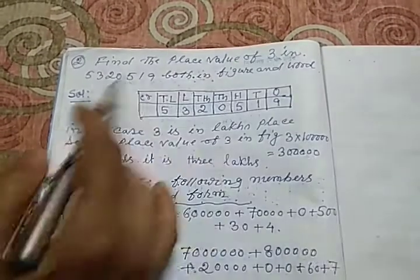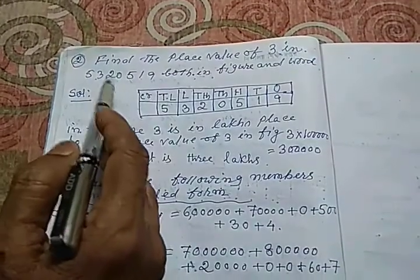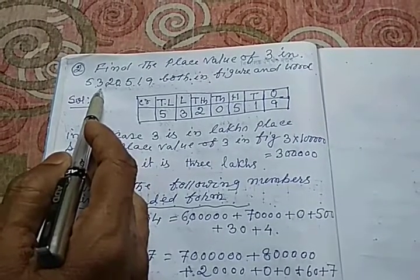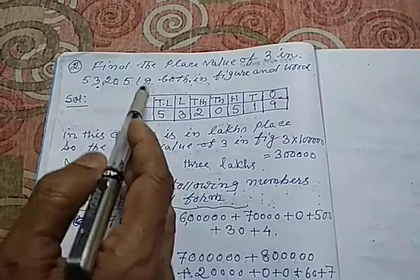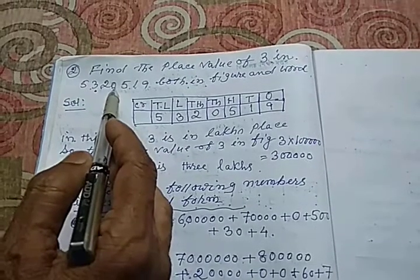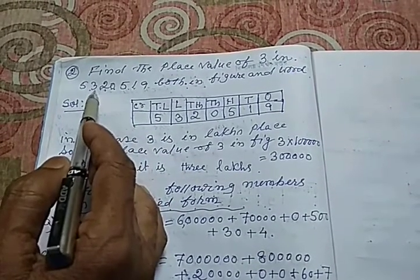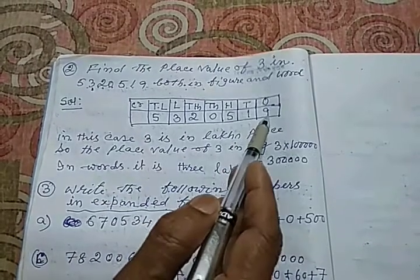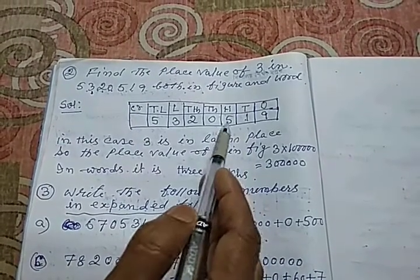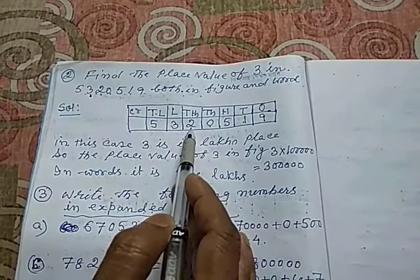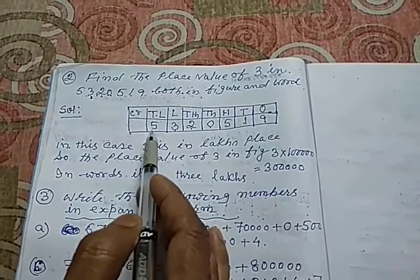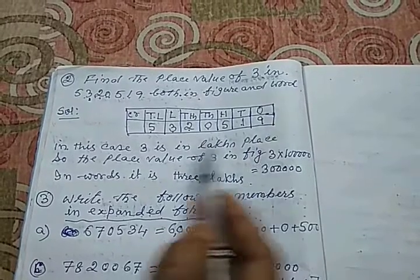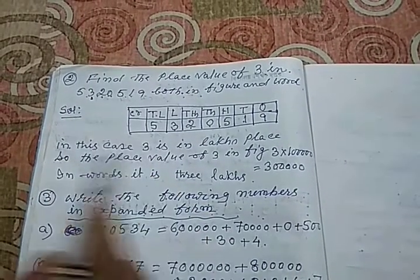Find the place value of 3 in 5320519. This is the given number and there is 3 in this number. 3 is a digit. There goes 1 place, 10 place, 100 place, 1000 place, 10,000 place and lakhs place. So I have put serially, one place mein 9 dal diya, 10 place mein 1, 100 place mein 5, 1000 place mein 0, 10,000 place mein 2, lakhs place mein 3 and 10 lakhs place mein 5. Always put the numbers or digits from right to left, right to left.